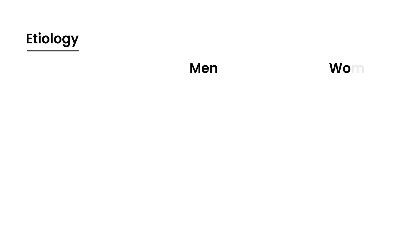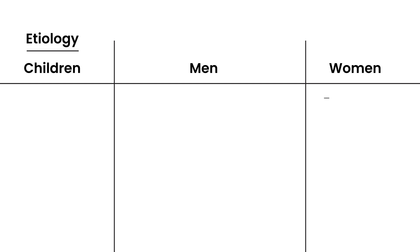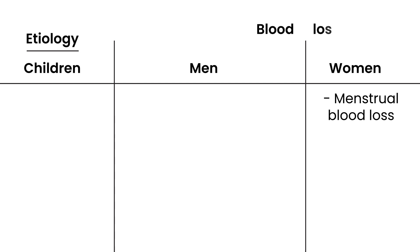What causes iron deficiency anemia? In women, the most common reason is menstrual blood loss — particularly in premenopausal women. In men, by far the most common cause is blood loss through some GI tract pathology, most commonly some sort of carcinoma.